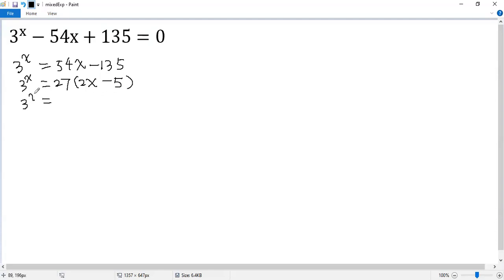So 3 to the power of x, 27 is 3 cubed, so 3 cubed times 2x minus 5. Both sides divided by 3 cubed, so we get 3 to the power of x minus 3 equals 2x minus 5.